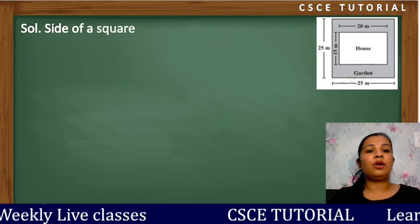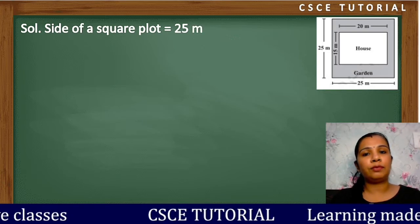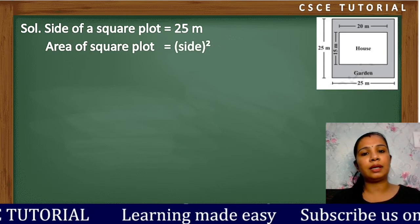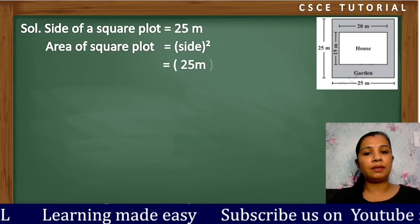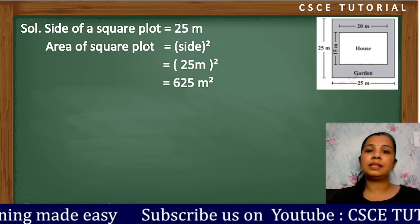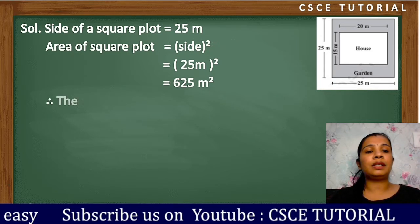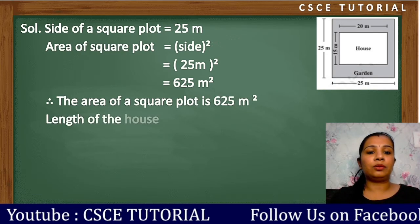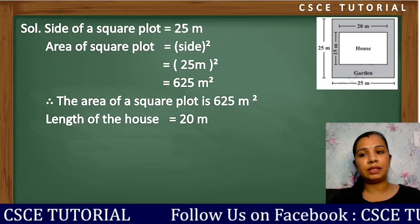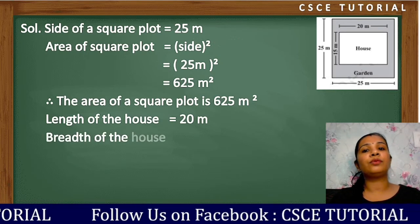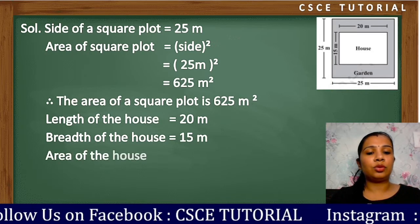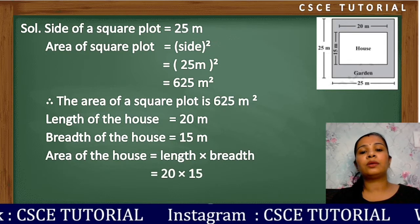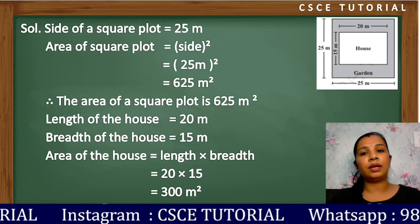First, we write: side of the square plot is 25 meters. Area of the square plot is 25² = 625 square meters. After that, the length of the house is 20 meters and the breadth of the house is 15 meters. Area of the house = length × breadth = 20 × 15 = 300 square meters.